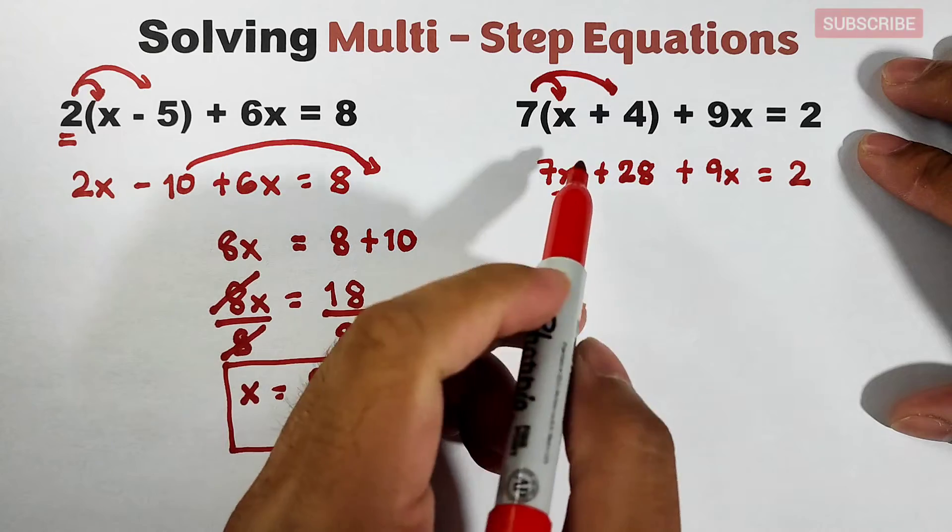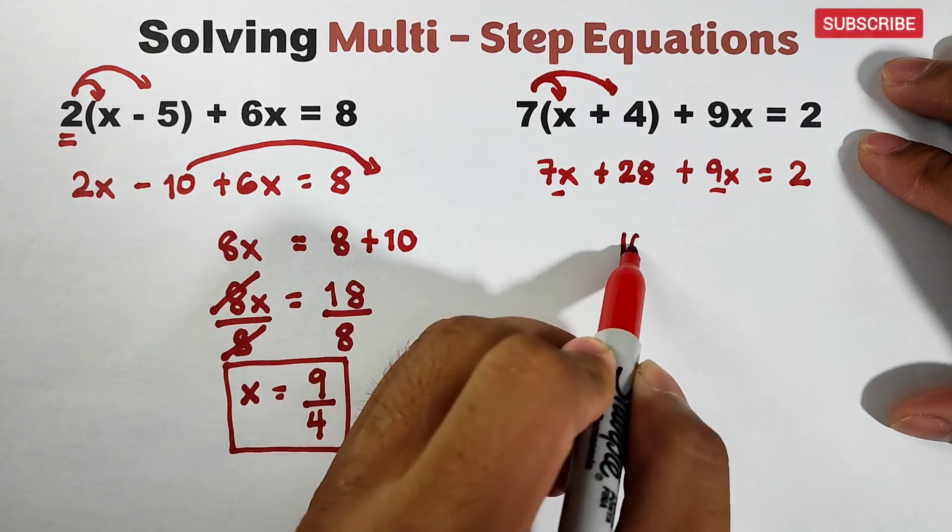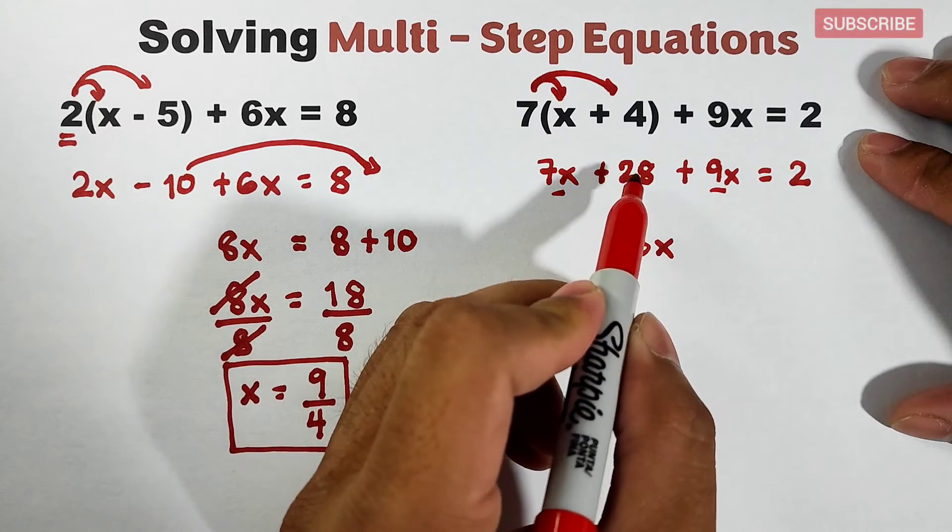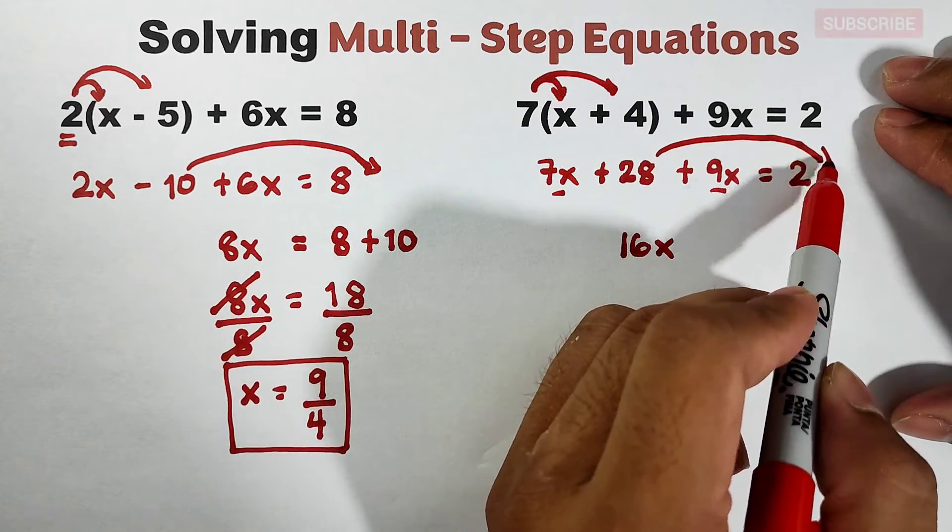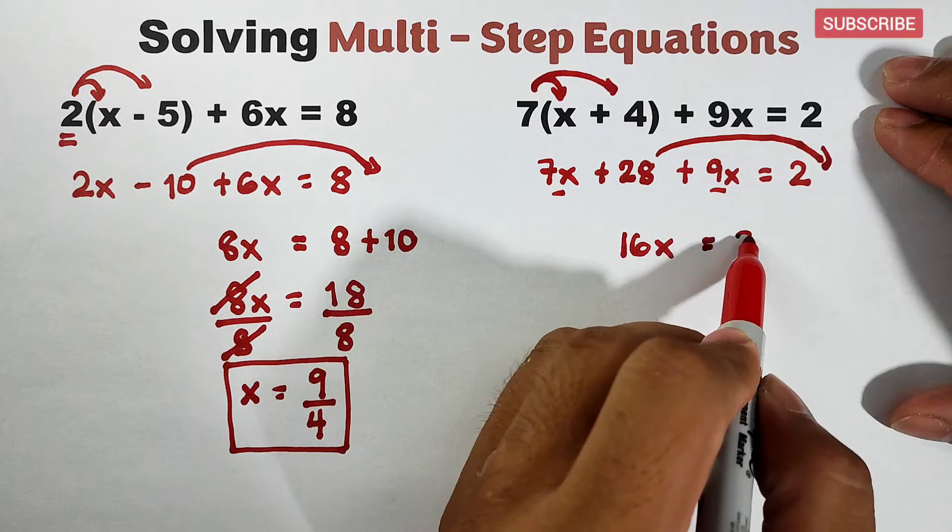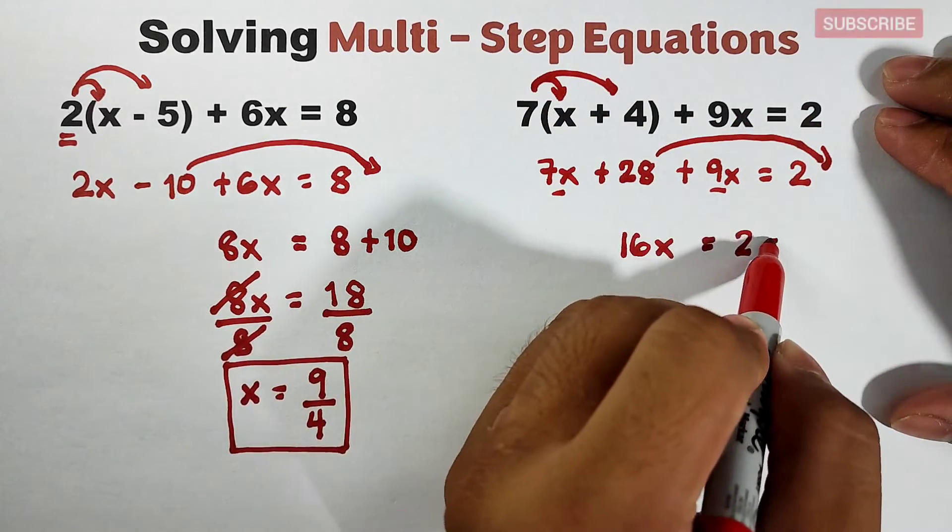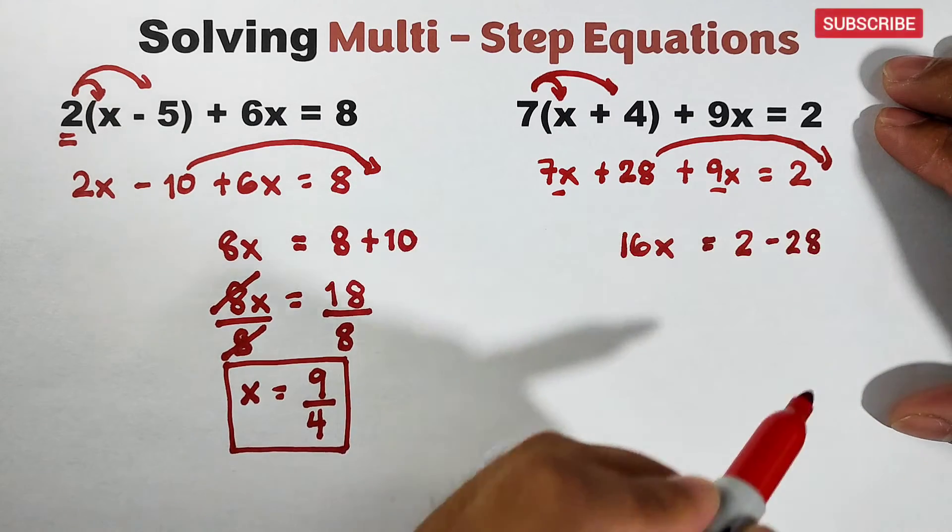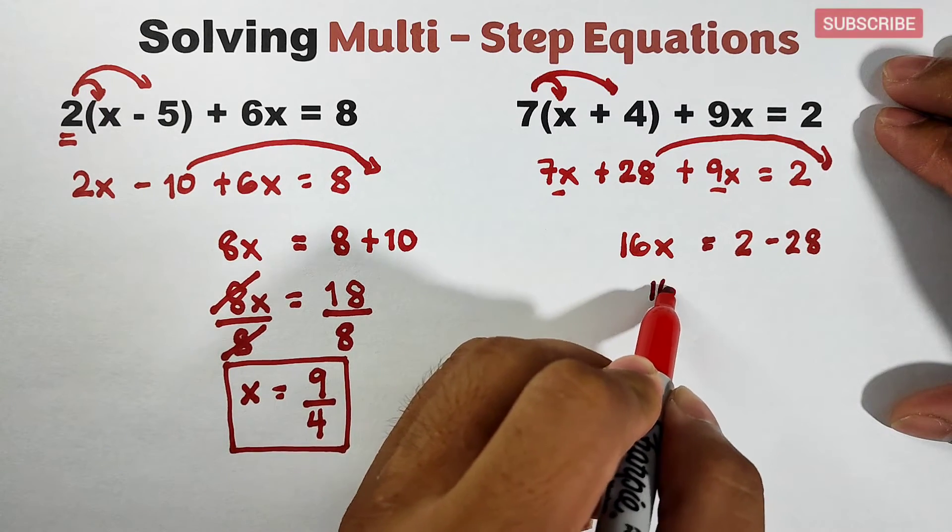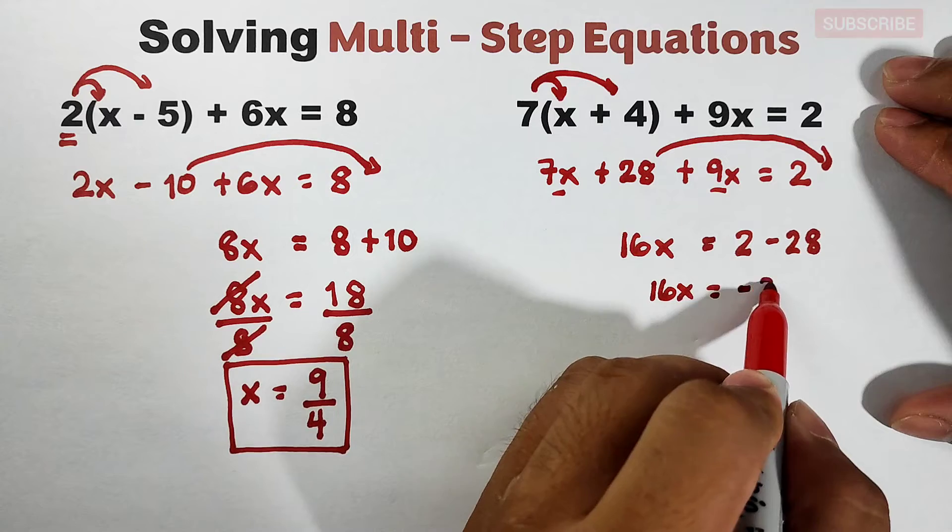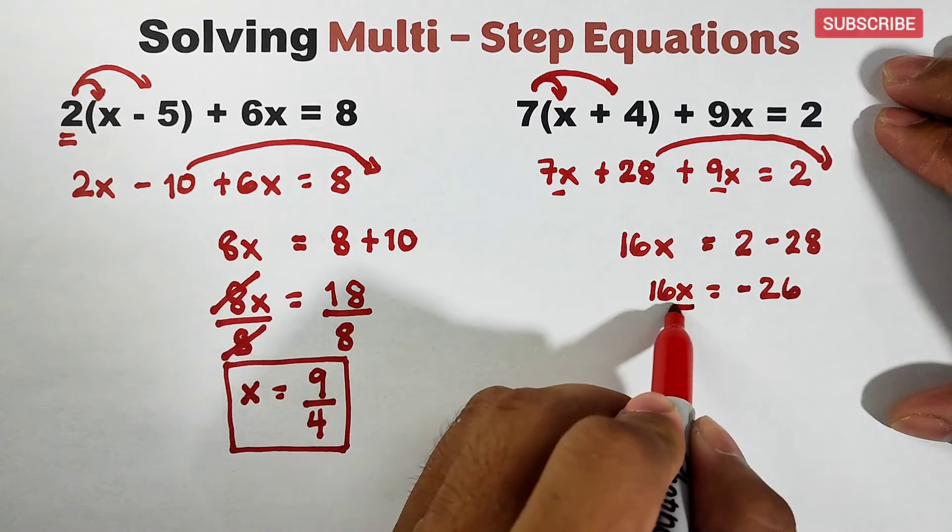As you can see, there are like terms here: 7x and 9x, which will result in 16x when we add them. Then copy 28, or we can simply transpose this to the other side. It will become equal to 2, then from positive, after transposing to the other side, this is minus 28. Now this is 16x equals negative 26. To solve for the value of x, divide both sides by 16.